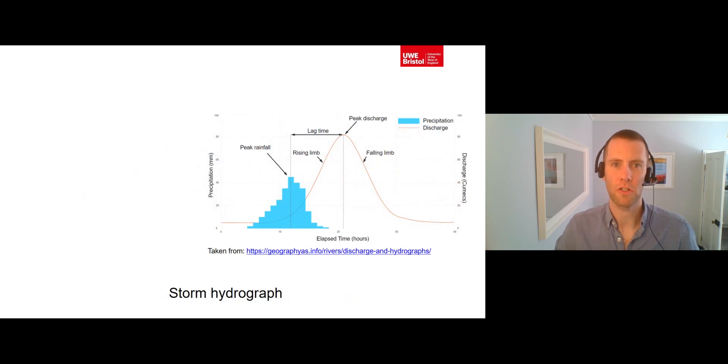A storm hydrograph, otherwise known as an event hydrograph or a flood hydrograph, is a graph of the discharge of a river before, during, and following a significant rainfall event. We can see several different stages in the example storm hydrograph below.